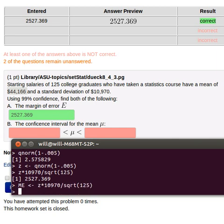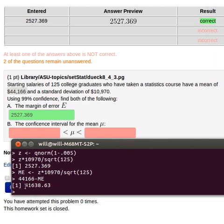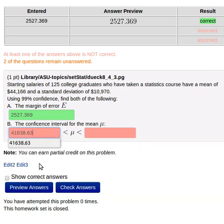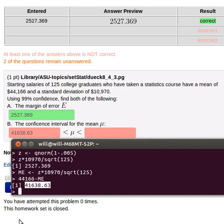So now it's going to be easy to do because we just need to take that 44,166 minus the margin of error. That's going to be the lower bound of this confidence interval.